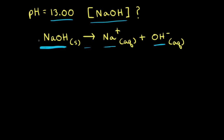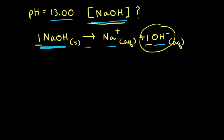Looking at the balanced equation, there's a 1 in front of sodium hydroxide and a 1 in front of hydroxide ions. Therefore, the concentration of hydroxide ions is equal to the initial concentration of sodium hydroxide. And we can find the concentration of hydroxide ions in solution from the pH.